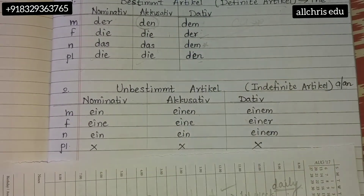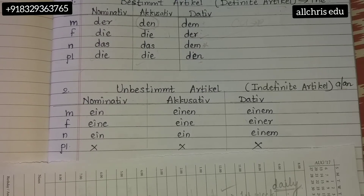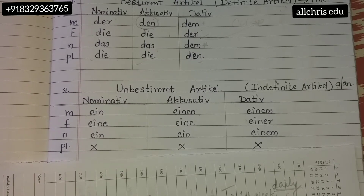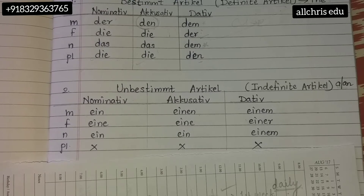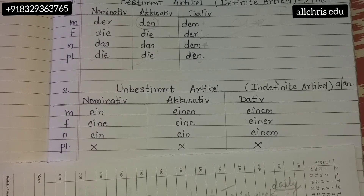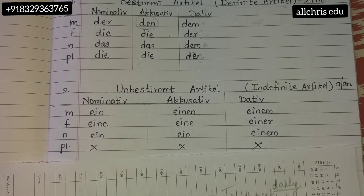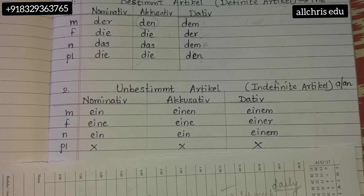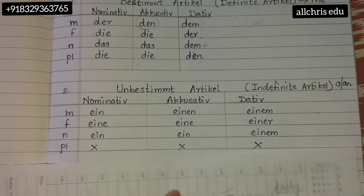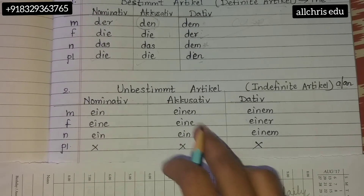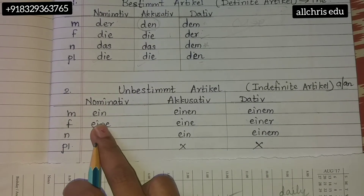Don't worry — in the beginning when you're writing the rule chart daily, you can see and write it. You yourself will find that naturally you are registering it in your mind. You don't have to sit and mug everything up. You'll keep writing and it will automatically be registered. For unbestimmter Artikel, in the nominative column all words are ein.